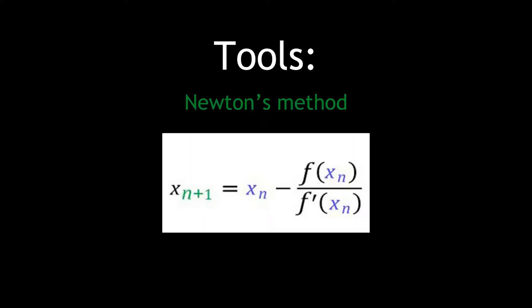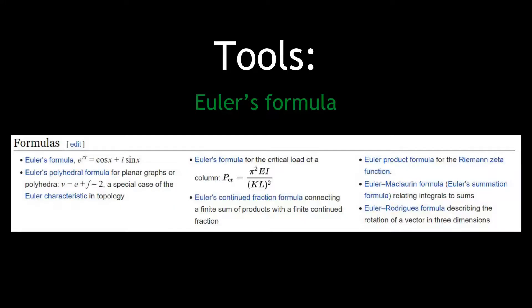This will require knowledge on how Newton's method works, as well as one of the many formulas named after Euler: e to the ix equals cosine x plus i sine x.